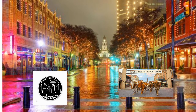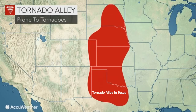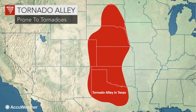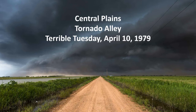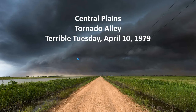San Antonio is probably my favorite city, but Fort Worth is right behind it. The central plains is also known as Tornado Alley. It is prone to tornadoes — not just the north central plains, but also the Great Plains and all the way up into the midsection of the United States. Down here in Texas, the north central plains are particularly prone to tornadoes. One of the worst tornado outbreaks in history was called Terrible Tuesday, on April 10, 1979.